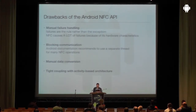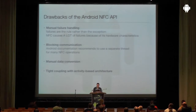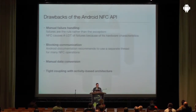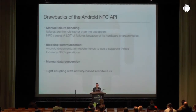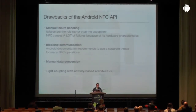The third drawback is manual data conversion. If you have high-level application data that you want to store on an NFC tag, you have to constantly convert it to and from NDEF messages, which are essentially byte arrays — this is pretty low level. A last minor drawback is a tight coupling with the activity-based architecture: for discovery you are always tied to an activity, making it hard to perform NFC operations outside of an activity context.